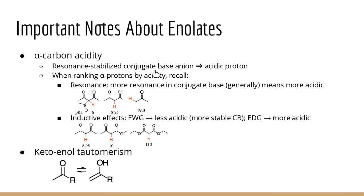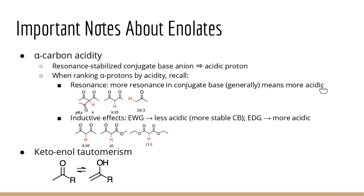For the relative acidity of alpha carbons: since it's a resonance-stabilized conjugate base, we get that acidic proton. More resonance in the conjugate base generally makes it more acidic. So a hydrogen that is the alpha hydrogen for multiple carbonyls will be more acidic because it can have resonance with all of them. Inductive effects also matter — an electron donating group makes the alpha hydrogen more acidic, while an electron withdrawing group makes it less acidic.